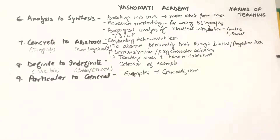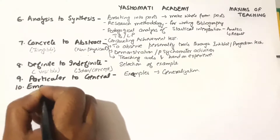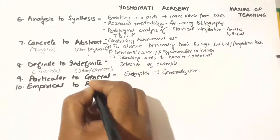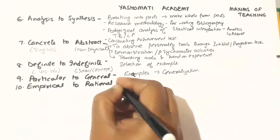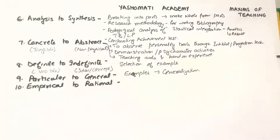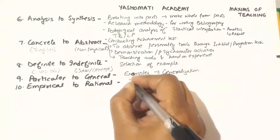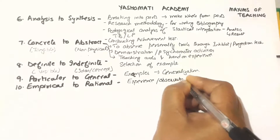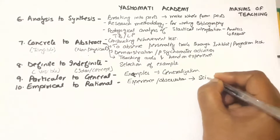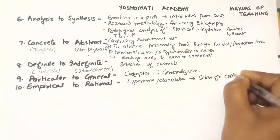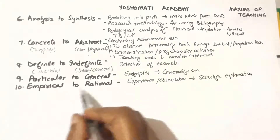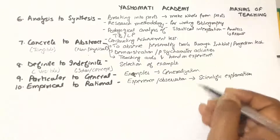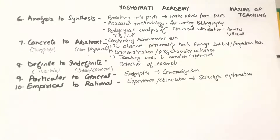Another maxim is Empirical to Rational. The word empirical means what can be practically seen, and rational means what has a scientific reason. So when we are learning from experience or observation and then we look for a scientific explanation, we are using this maxim — Empirical to Rational. Taking the same example: the sun rises in the east — this is something we can observe every day.